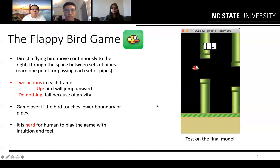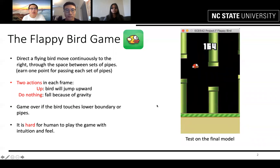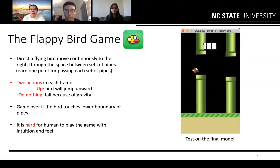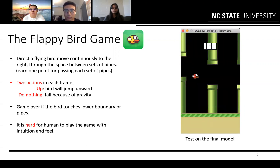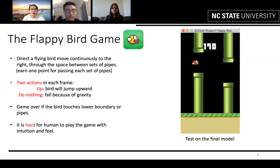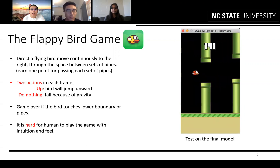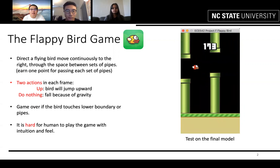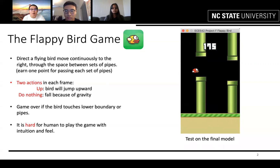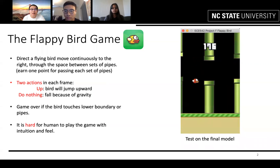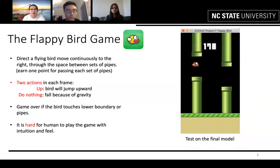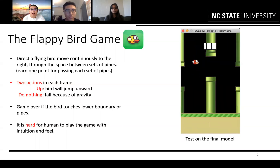Flappy Bird is one of the most popular games all over the world. The objective of the game is to direct a flying bird moving continually to the right through the space between sets of pipes. The player will earn one point for passing each set of pipes.